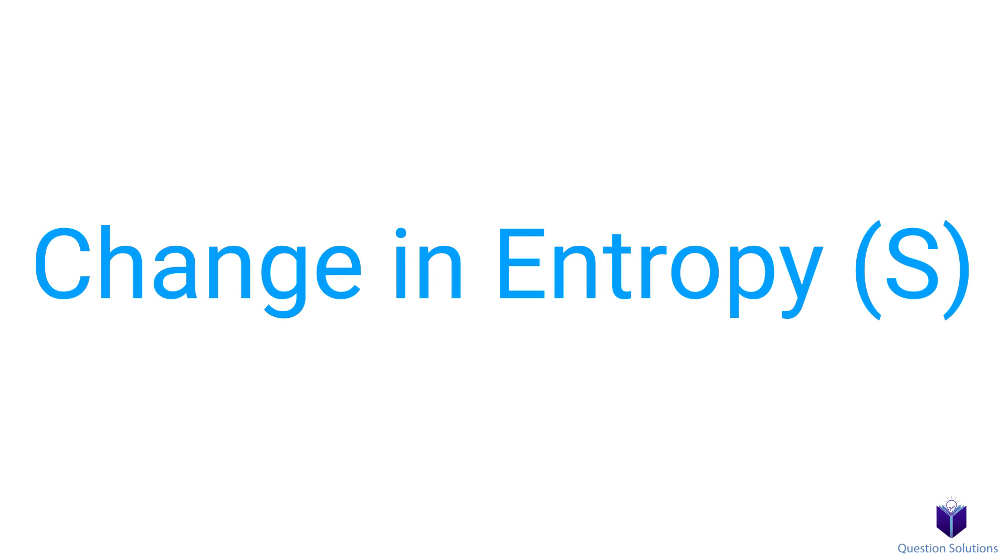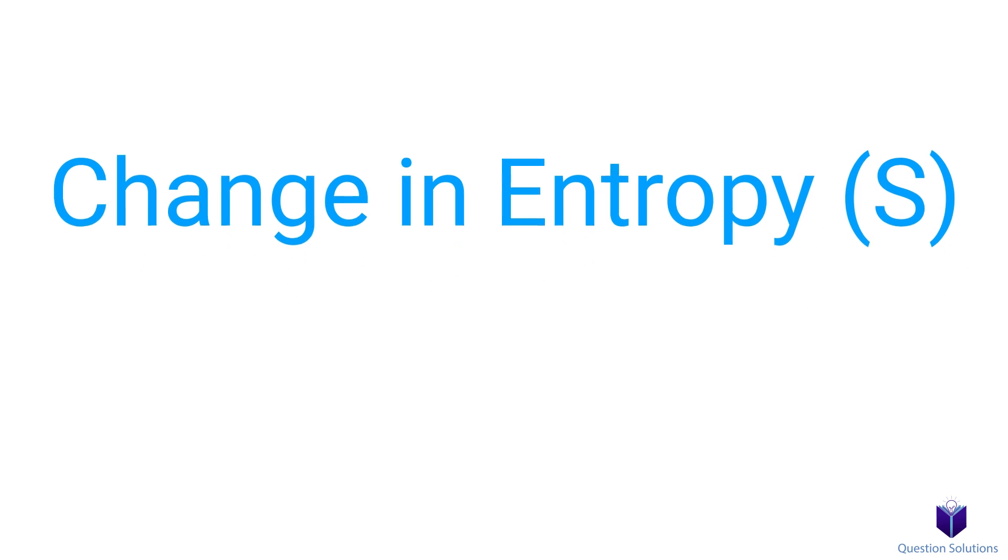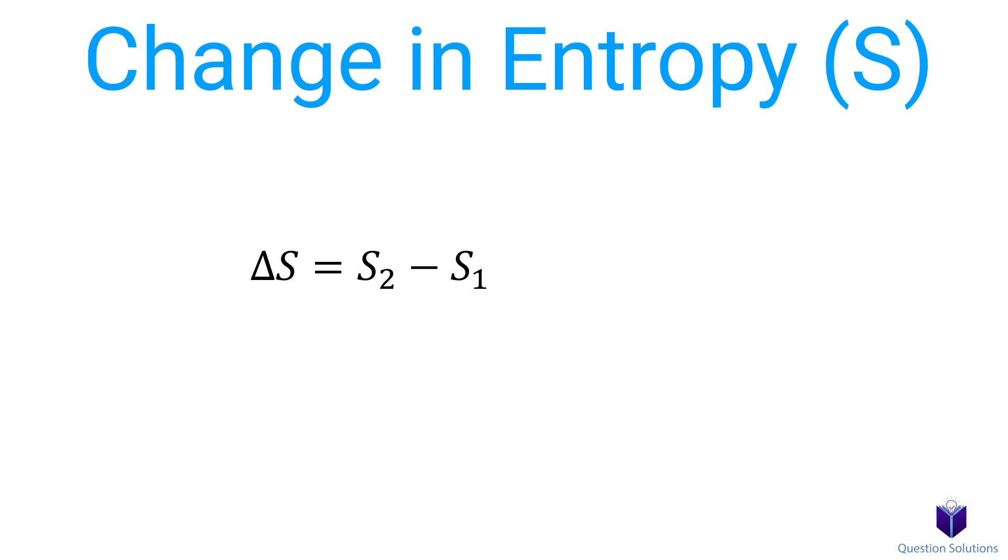This change in entropy, denoted with the capital letter S, can be found using this equation. The integral version of it looks like this. This is the entropy of the first state, and this is the entropy of the second state. When you solve problems, you can assign a value of zero at some arbitrarily selected reference state, and then figure out the entropy of the second state.